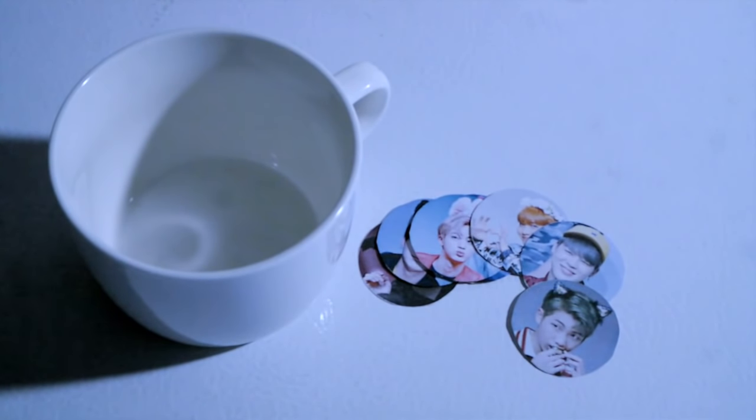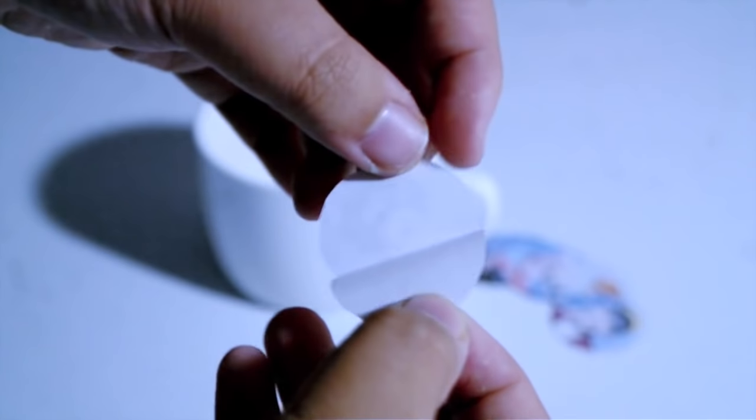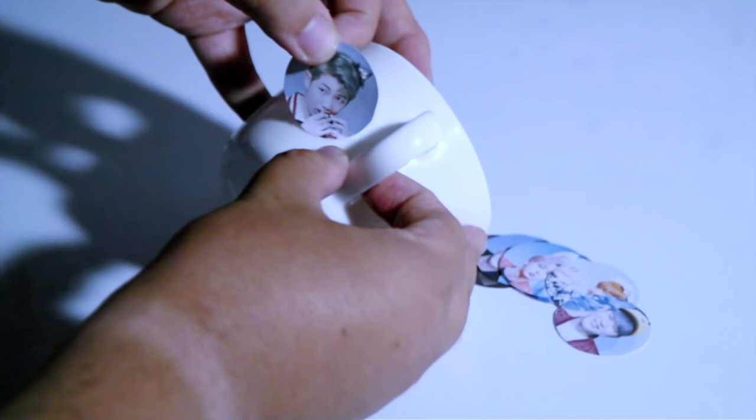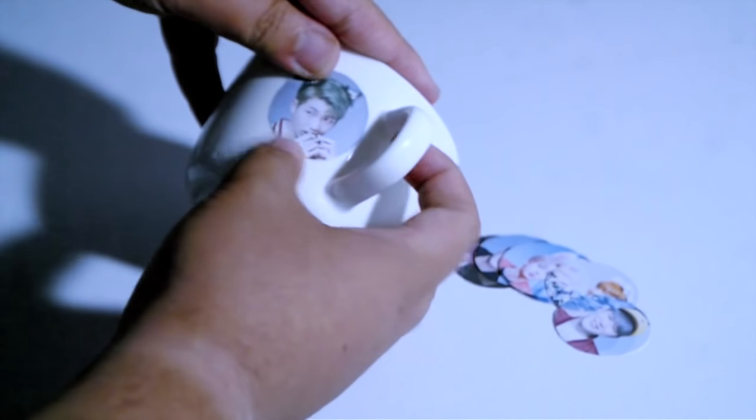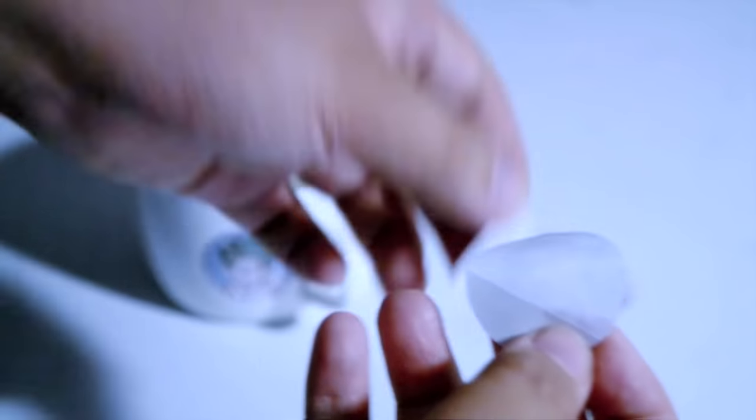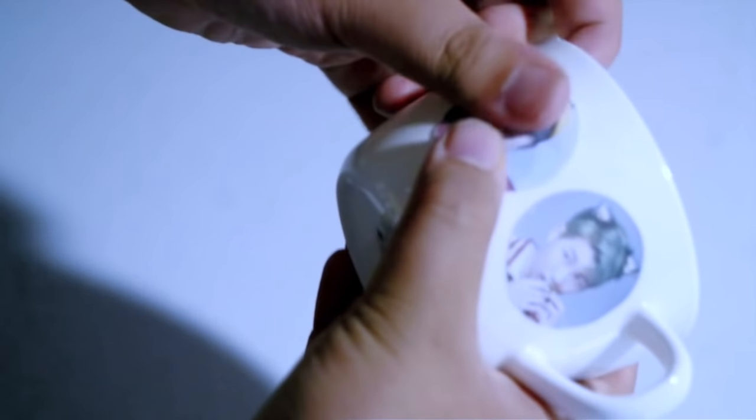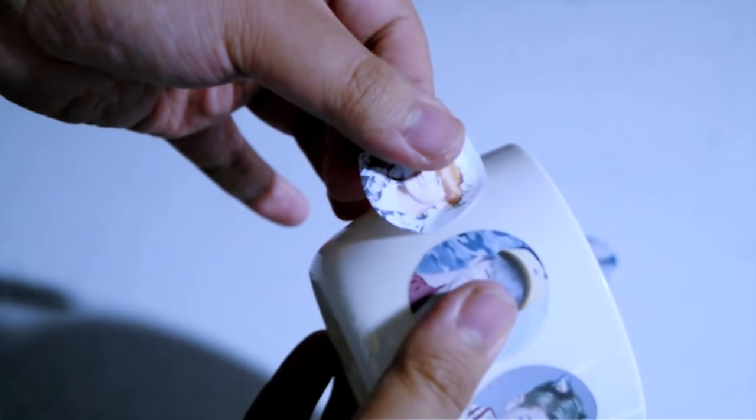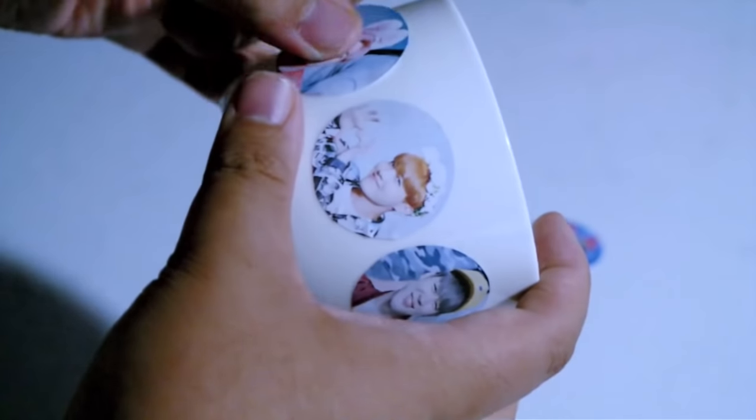So the last DIY I think is going to be really easy. You're just going to be needing some images of your choice that are printed onto sticker paper. And I will leave the link to where you can buy some sticker paper in the description box below. But as you can see, I am using these little BTS stickers that I made myself and decided to put them around the cuff like so.